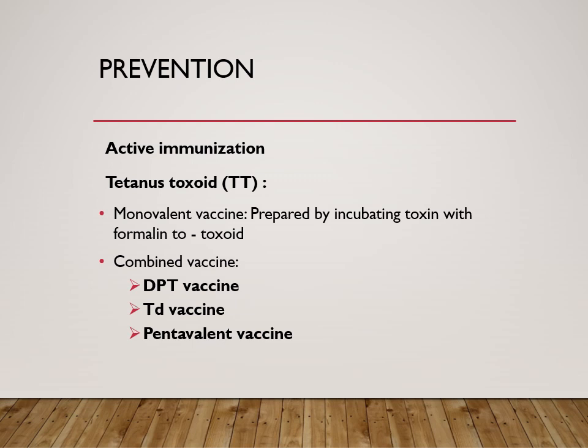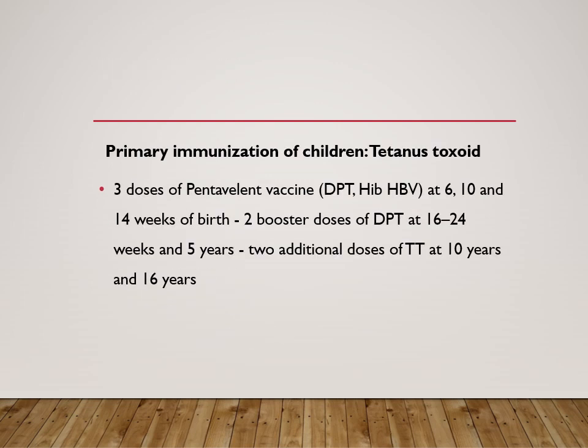Different vaccinations are available: DPT vaccine combining diphtheria, pertussis, and tetanus. The Td vaccine is given to adults with a full dose of tetanus but a reduced dose of diphtheria. There is also the pentavalent vaccine. For primary immunization of children, three doses of tetanus toxoid are given at six, ten, and fourteen weeks — either as a pentavalent vaccine combining DPT with HiB and HBV, or as DPT alone. Two booster doses are given at 16-24 months and five years, plus two additional doses of TT at 10 years and 16 years.